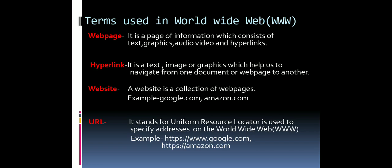Now let us discuss some of the terms used in the internet and World Wide Web. A web page is a page of information which consists of text, graphics, audio, video, and hyperlinks. So a web page is a collection of information — it may contain text, graphics, images, audios, videos, and hyperlinks.